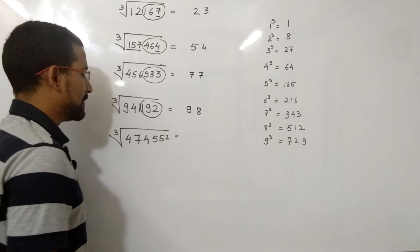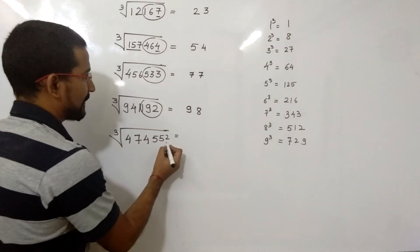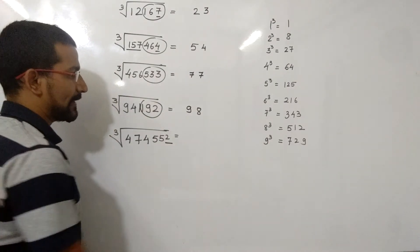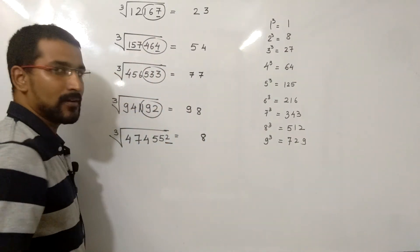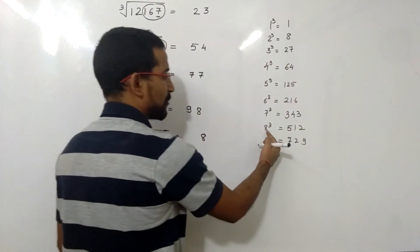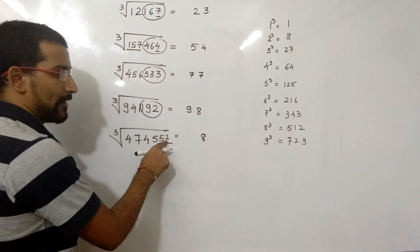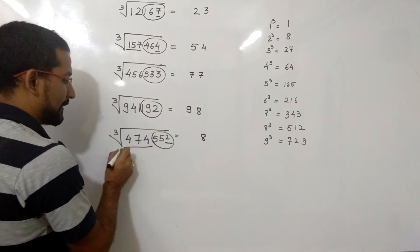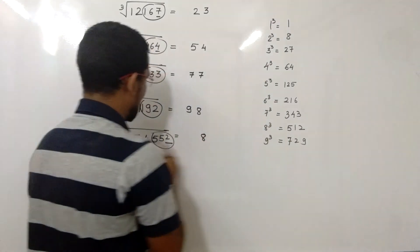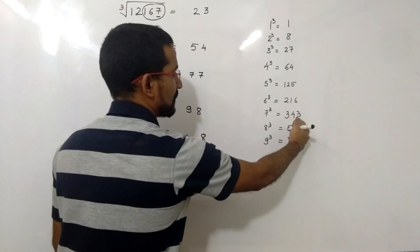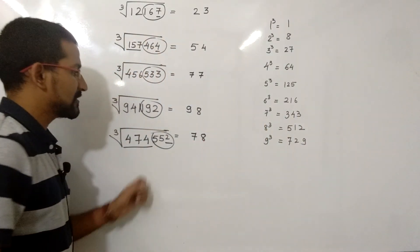Now the last example: cube root of 474552. It contains 2 in its unit place value, so the unit place digit is 8, because the cube of 8 is 512 which contains 2 in its unit place. Leave out the last 3 digits; remaining is 474. Is there any cube equal to 474? No. Less than 474 is 343, and 343 is the cube of 7. So the answer is 78.